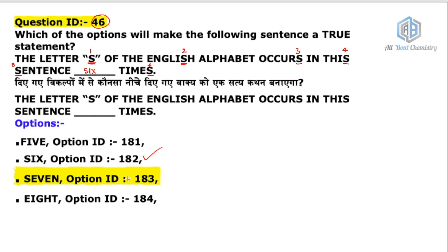But understand what the question is really asking — that's where aptitude tests your ability to think. They're not asking how many times S currently appears; they're asking which option will make the sentence a true statement. If you write 'six' in the blank, tell me — is that a true statement? We already had six S's, but now the word 'six' adds one more S, giving a total of seven S's. So six cannot be the answer.